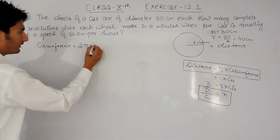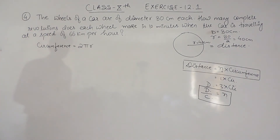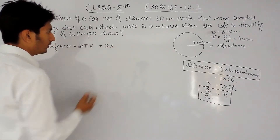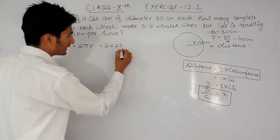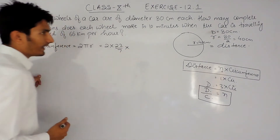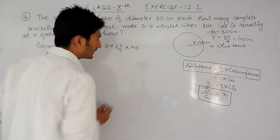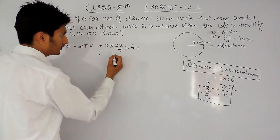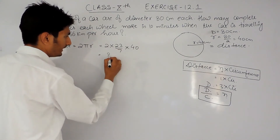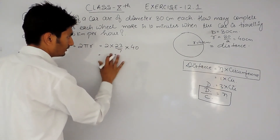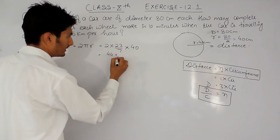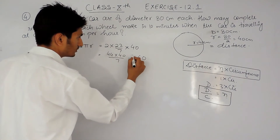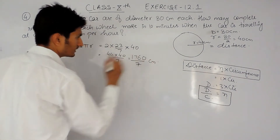First, let's find the circumference. The circumference of a circle is 2πr, so that is 2 × (22/7) × 40. Solving this, it will be 44 × 40 / 7, which equals 1760/7 cm.